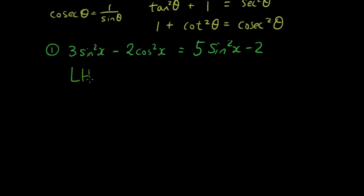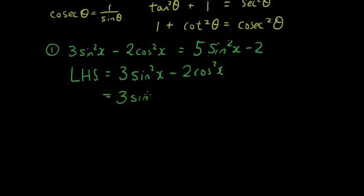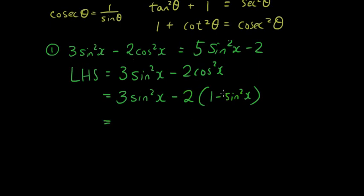The left hand side is equal to 3 sin squared x minus 2 cos squared x, which equals 3 sin squared x minus 2 bracket 1 minus sin squared x, as I've just explained. And now expanding the bracket on the right hand side, it becomes 3 sin squared x minus 2 plus 2 sin squared x.